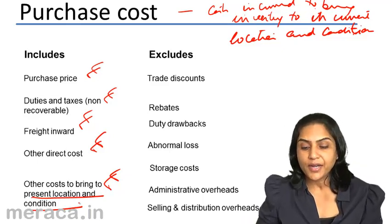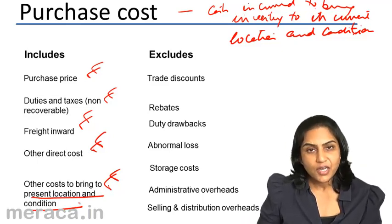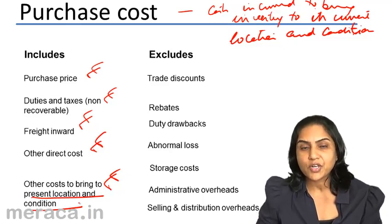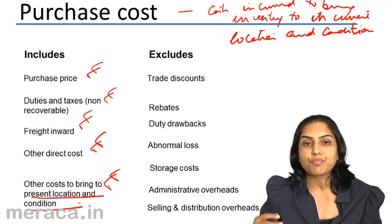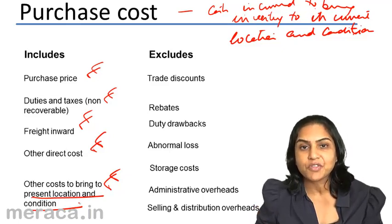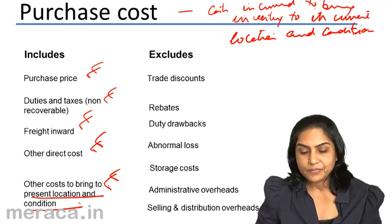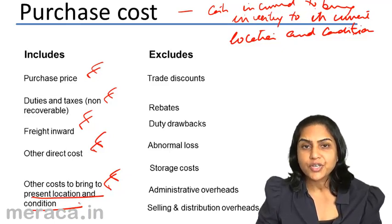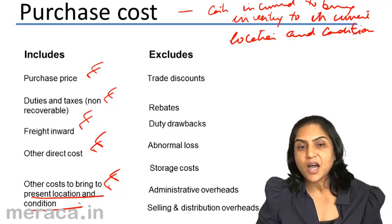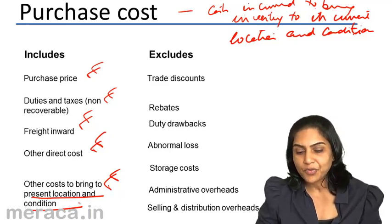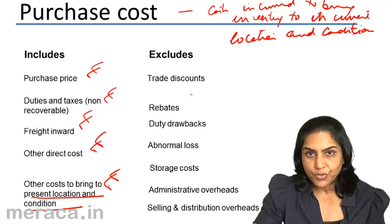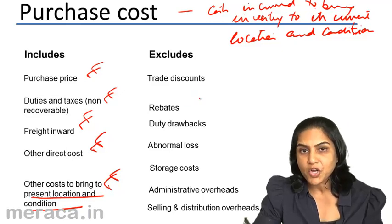What is not included in purchase cost is trade discount. Trade discount is anyway not a part of the books of account at all. It is the reduced price at which we receive the goods. Rebates are also discounts, only these rebates are refunded later — we pay the price and get a refund later. So if we expect these rebates, they are excluded; the rebates are removed from the cost of the good.